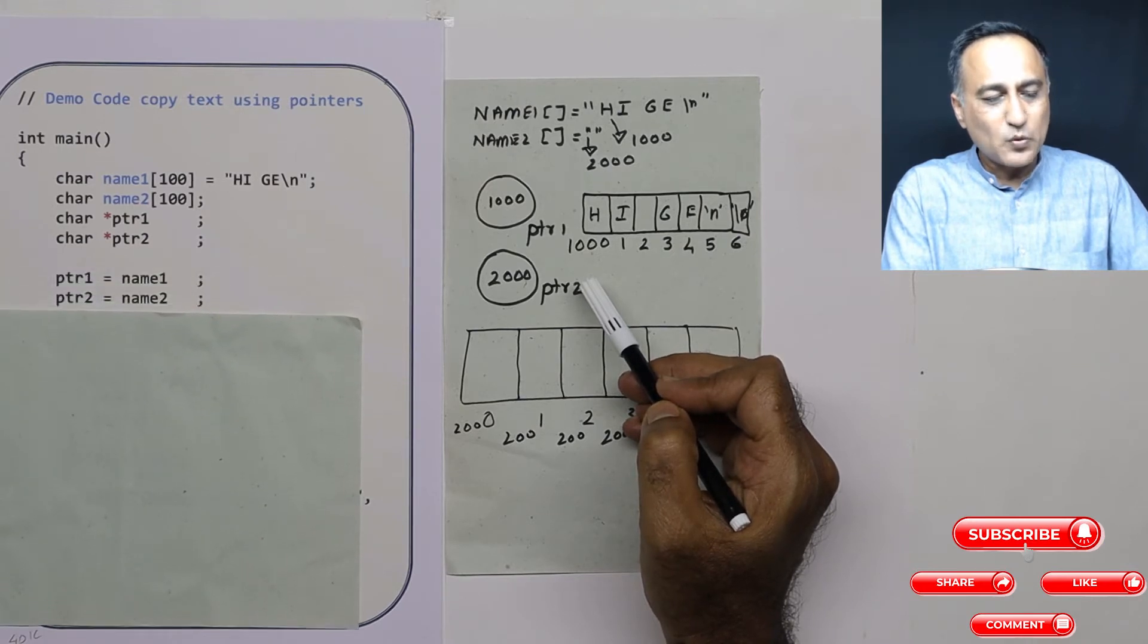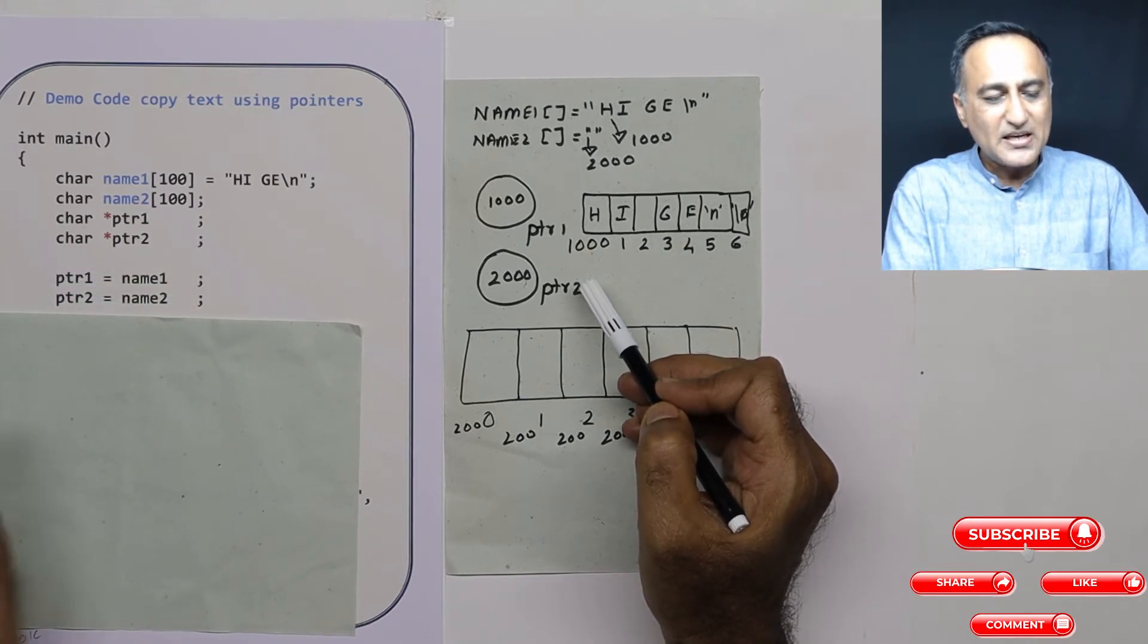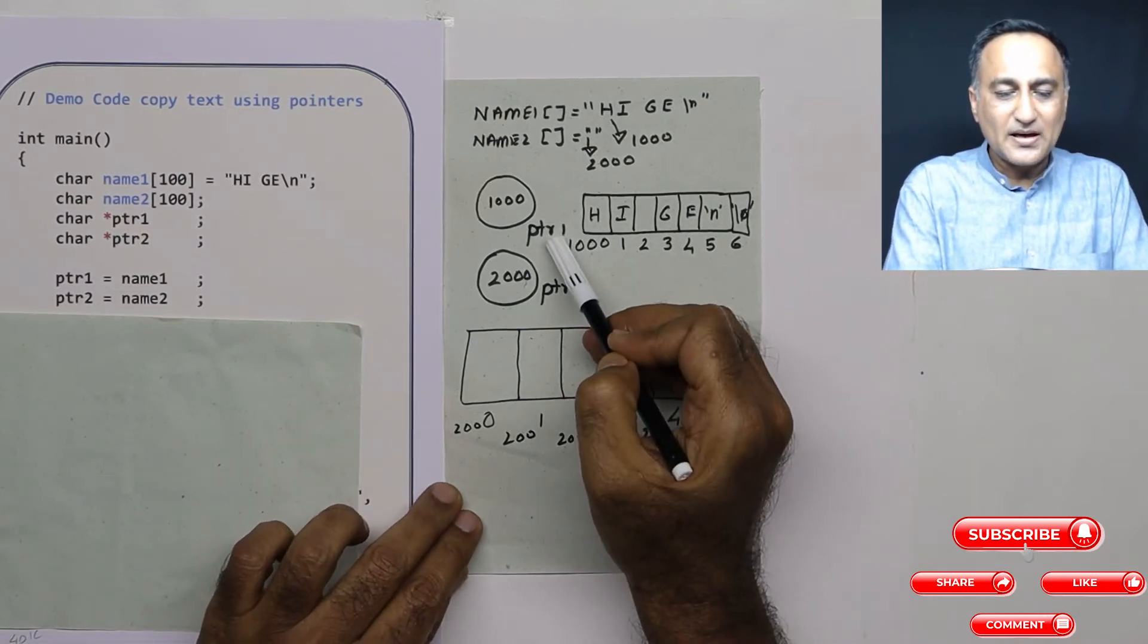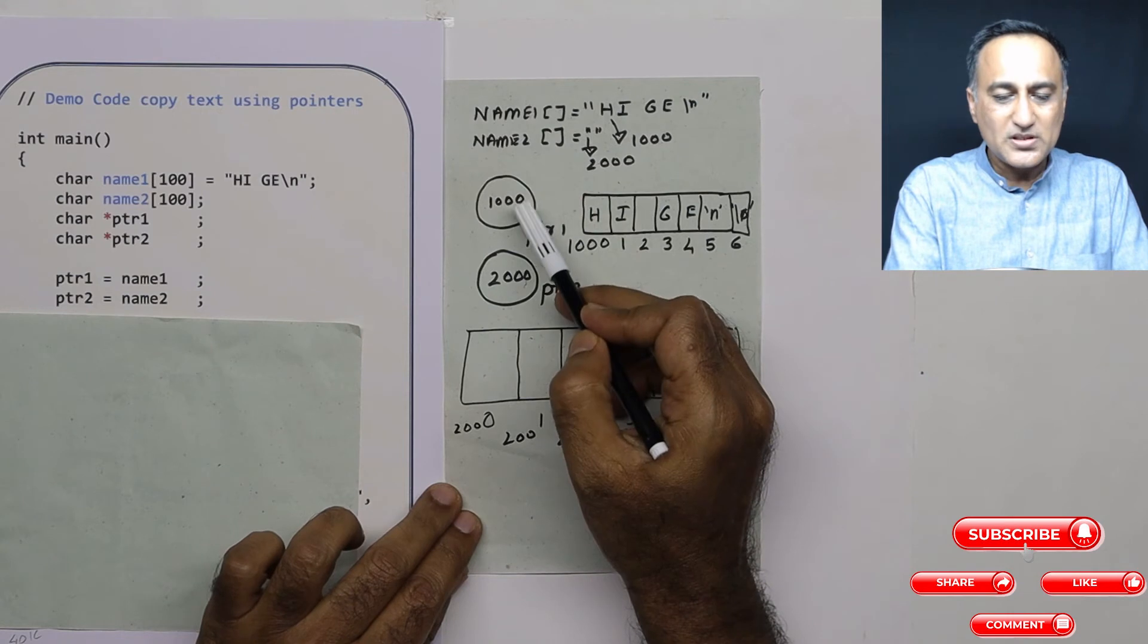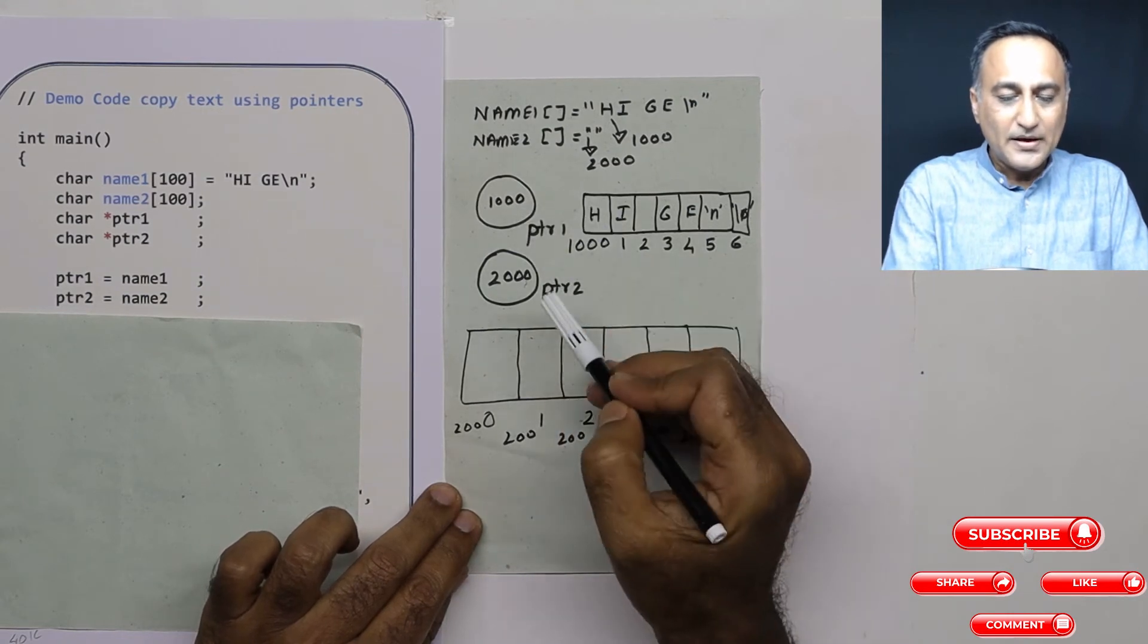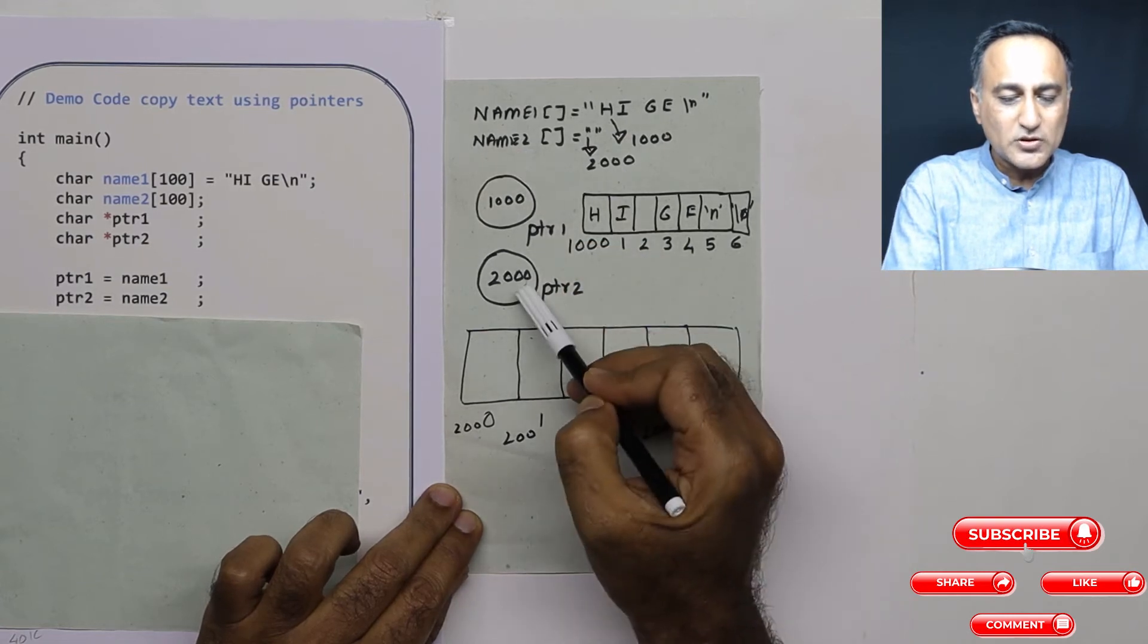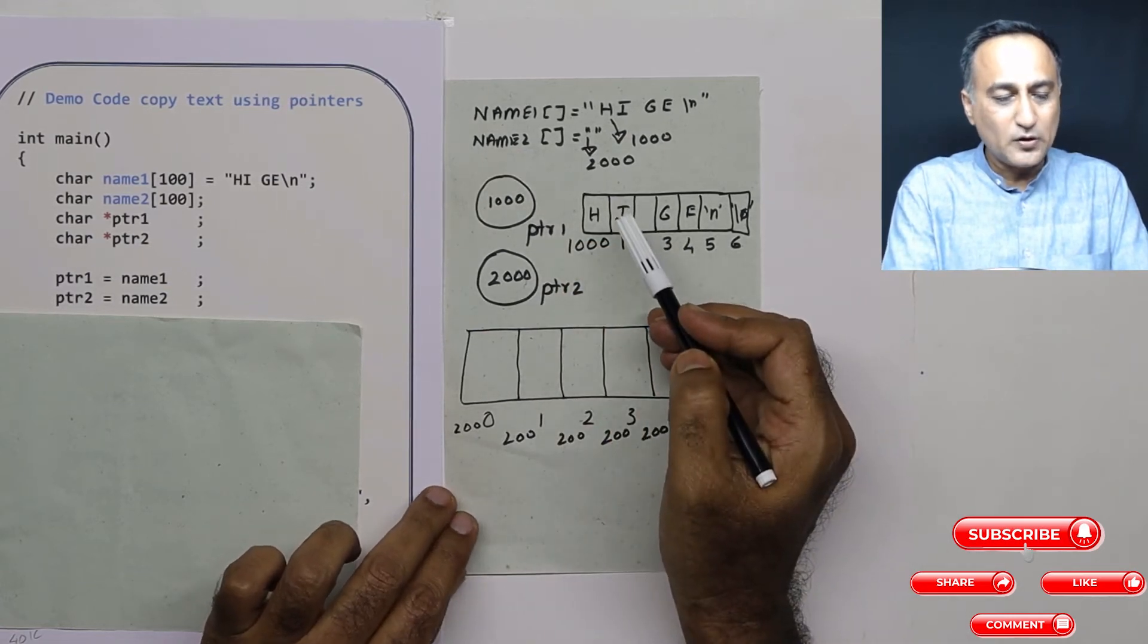So immediately in the next step, what I am doing is I am assigning ptr1 is equal to name1. So in the variable ptr1, the address of name1 which is 1000 is contained. In ptr2, the address of name2 which is 2000 is contained.